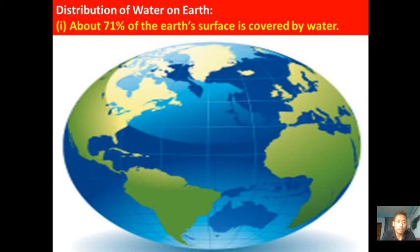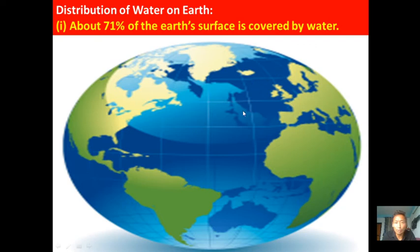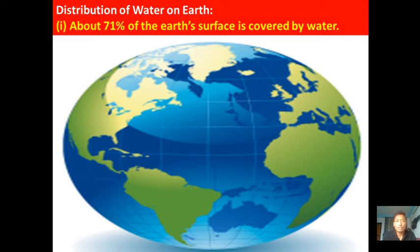About 71% of Earth's surface is covered by water. Looking at a globe, a large portion appears blue, showing the oceans and seas. Because water covers 71% of the Earth's surface, we sometimes call our Earth the 'Blue Planet.'